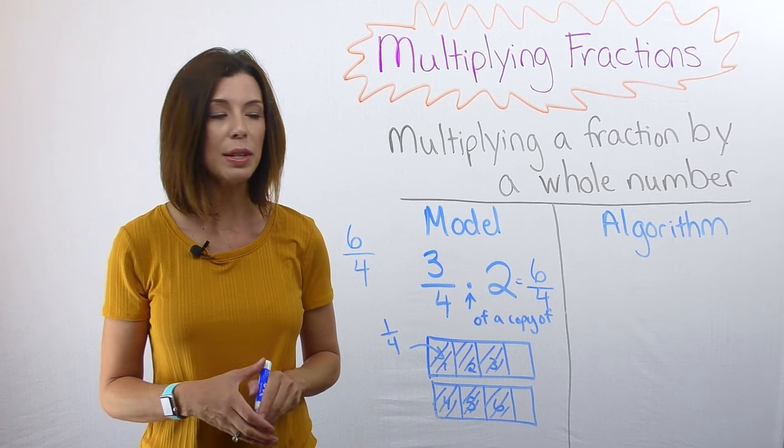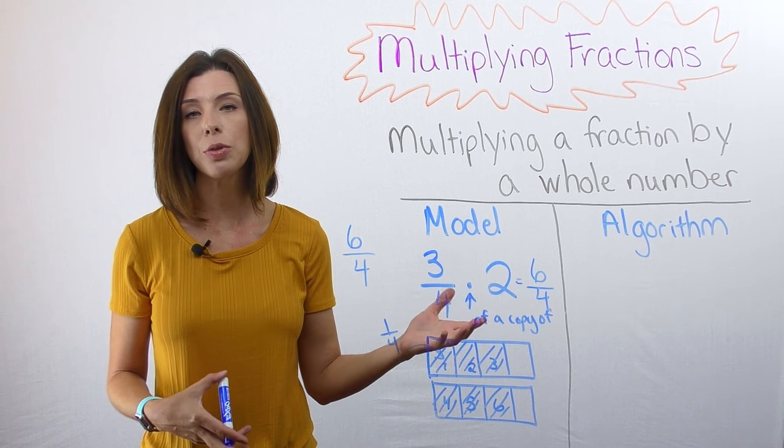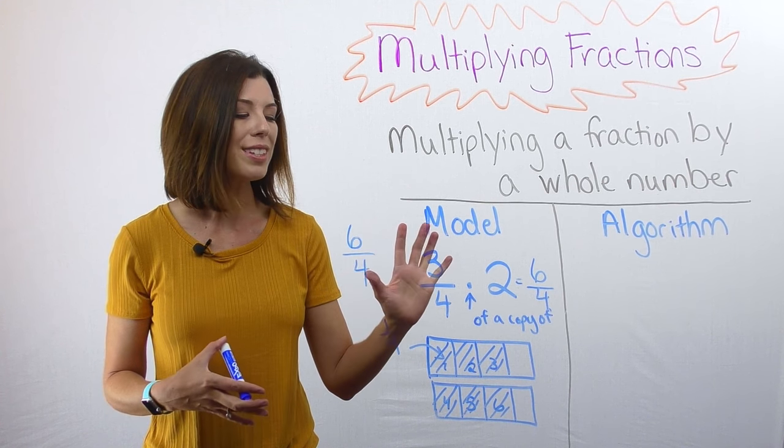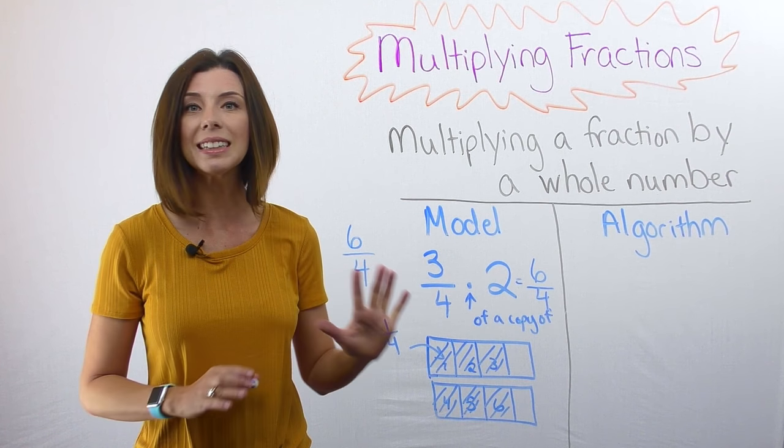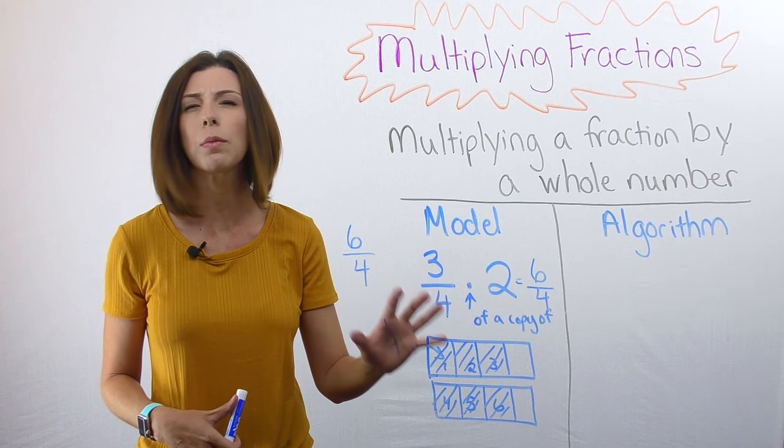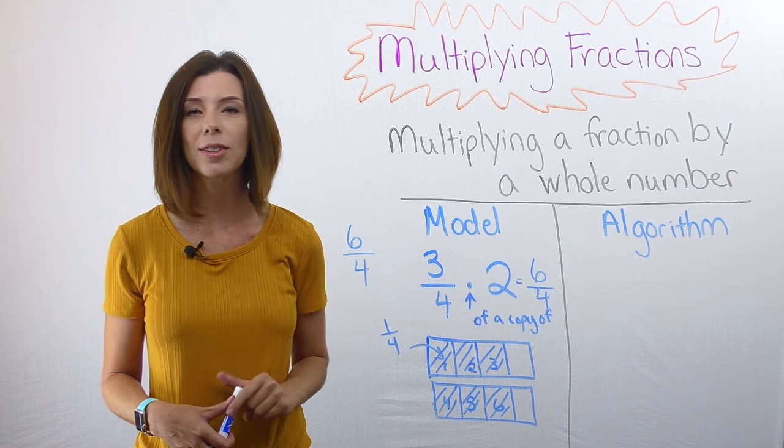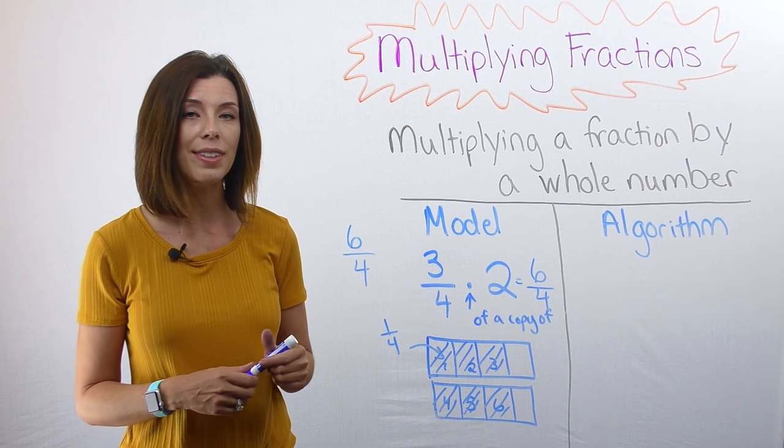Now, I can also simplify this. I can even turn it into a mixed number if I want. For the sake of this problem, I'm going to leave it as six copies of one-fourth because I want you to see that as compared to the algorithm. So now let's try the algorithm side.